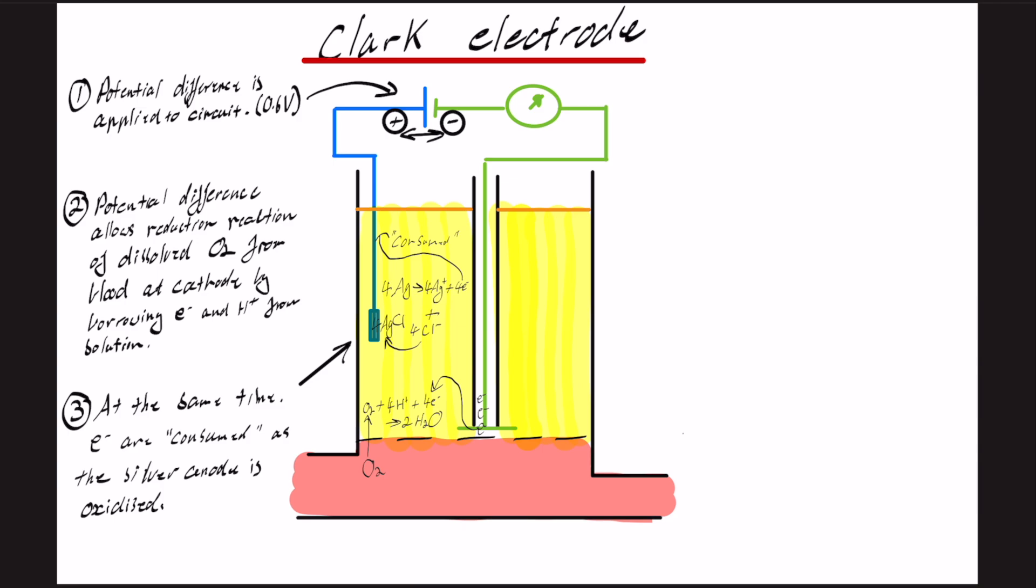And essentially, the rate of reduction at the platinum cathode is proportional to the oxygen tension, which produces electromotive force when borrowing the electrons from the cathode, which produces a current that can be measured.